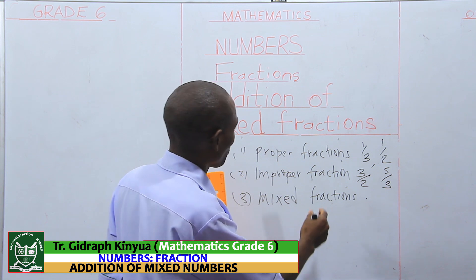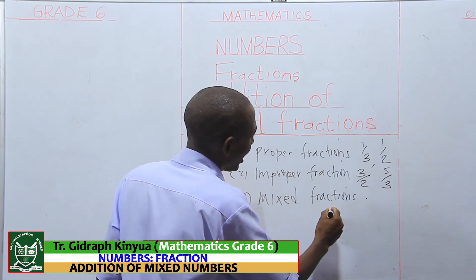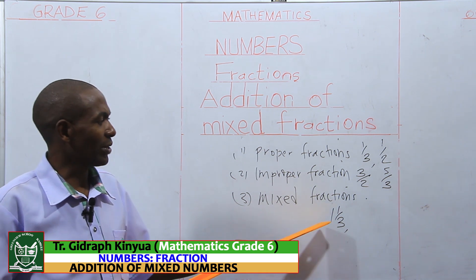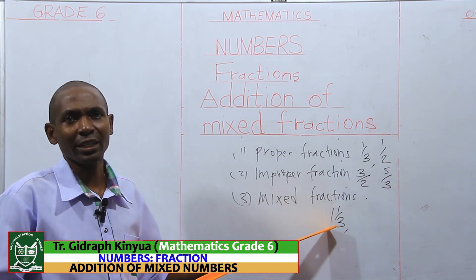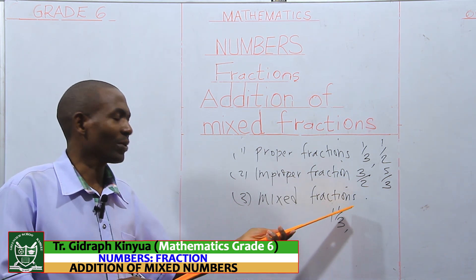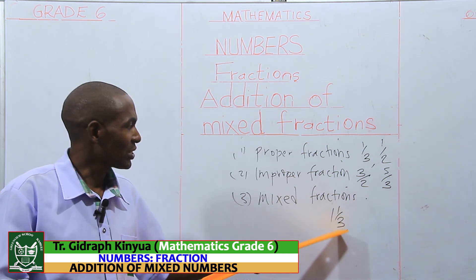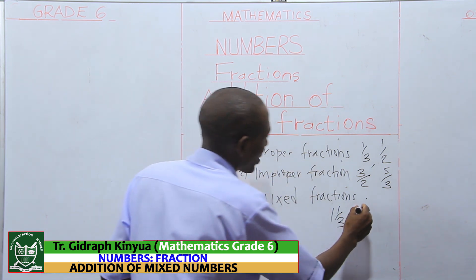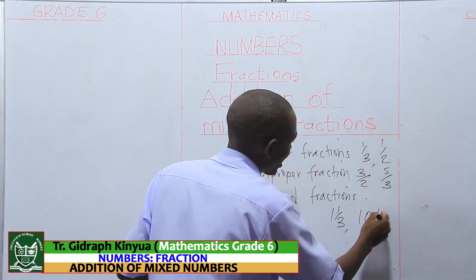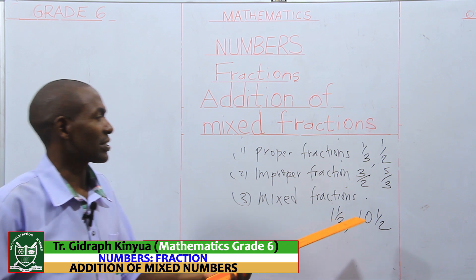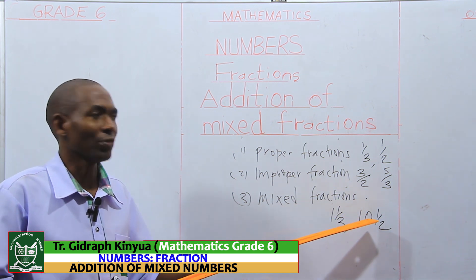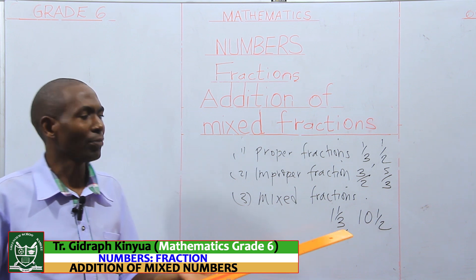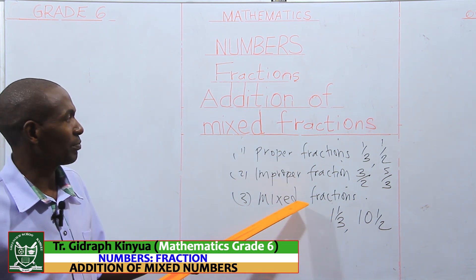When it comes to mixed fractions, we can have an example of one and a third. We have a whole number, which is one, and then we have one over three. We can also have ten and a half. You are able to give me more examples of mixed fractions.